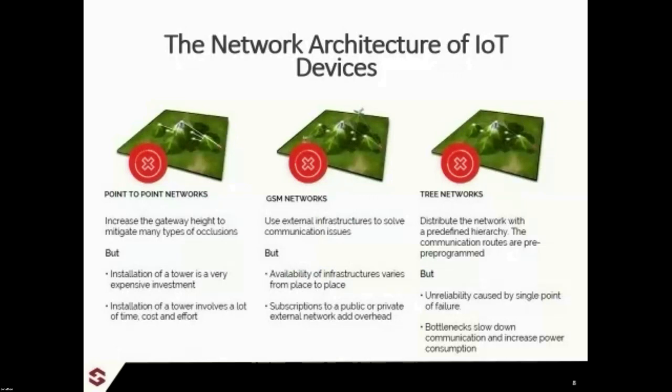There are a variety of different network architectures that go into IoT devices. There are three main types: point-to-point networks — basically a measurement point and a data aggregation point, singular, nothing in the middle. GSM networks, which are effectively cellular networks where all data goes to one singular source — the cellular tower — and then gets posted to the internet. And tree or star networks where one central point aggregates data from multiple remote stations and sends it to the cloud.